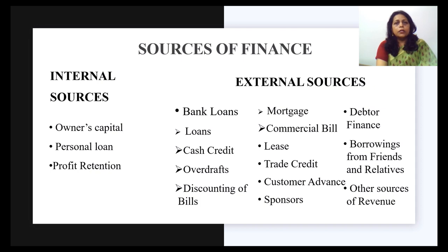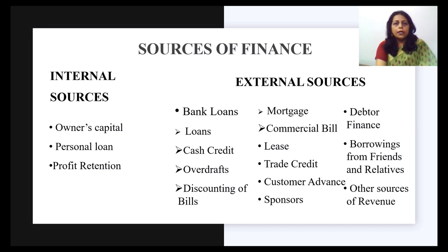Suppliers or trade credit is another short-term financial source provided through external sources to the event management company. As a business may give credit to its own customers, the firm may be able to negotiate credit terms with its suppliers. Funds are not available in cash, but it facilitates the purchase of supplies without immediate payment. No interest is payable on trade credits.